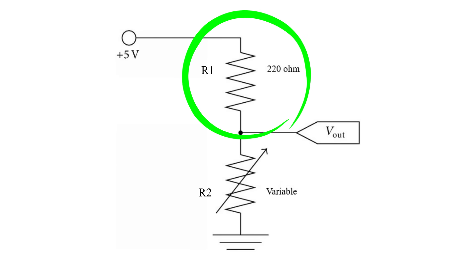That's the fixed resistor. That's the variable one. And at the junction of the two, that's the signal that goes to an analog input on the Arduino.